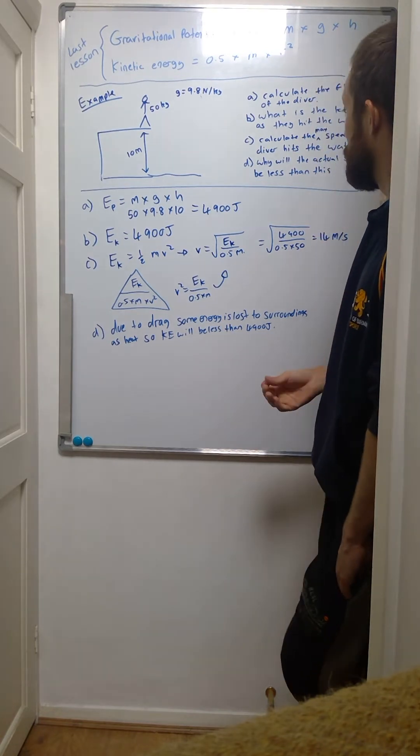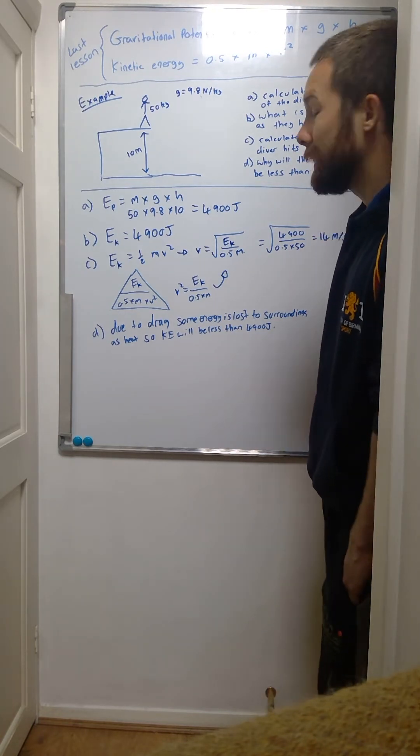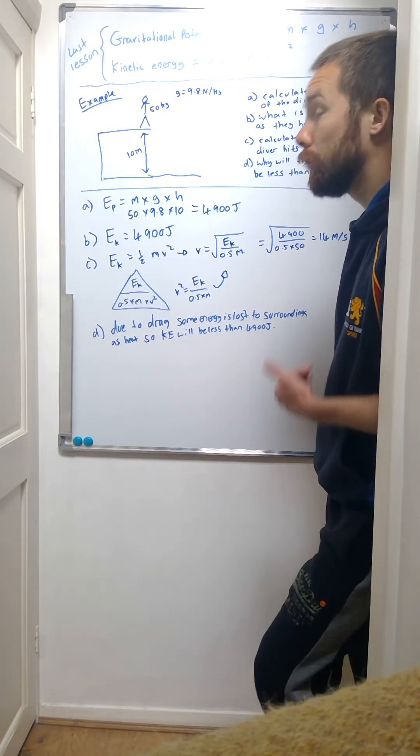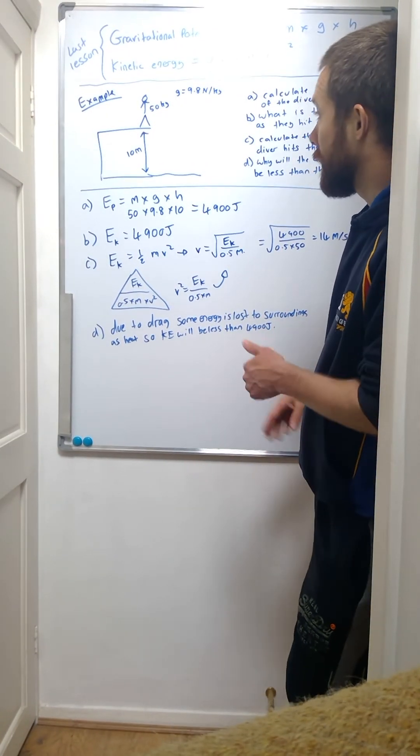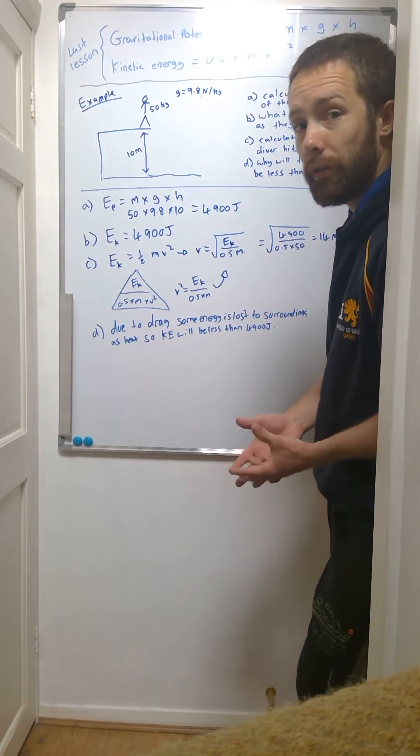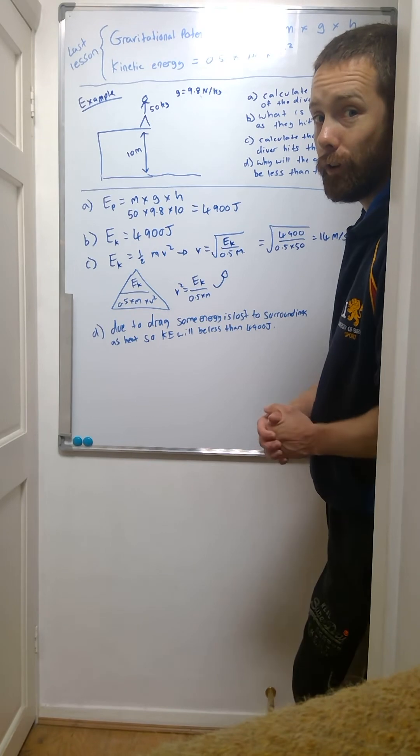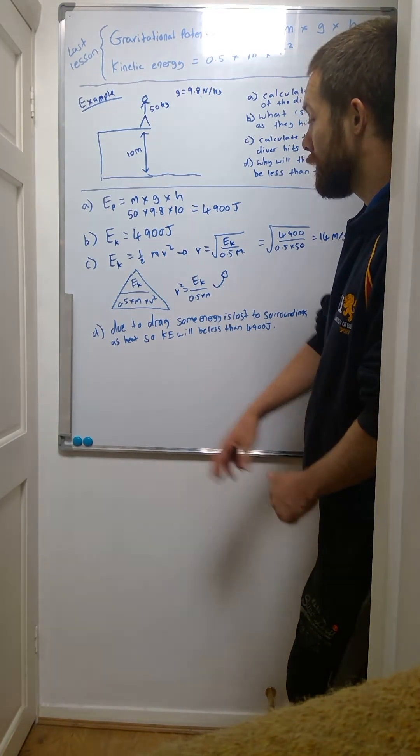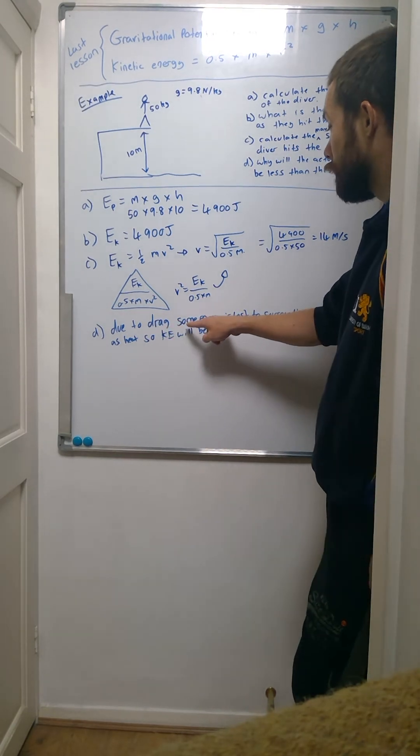Finally, then, why will the actual speed be less than this? Well, all of our work so far has assumed, as I said a few minutes ago, that there's no energy lost to the surroundings. All of that gravitational potential energy gets converted into kinetic energy. Now realistically, that's not the case. There is some drag.